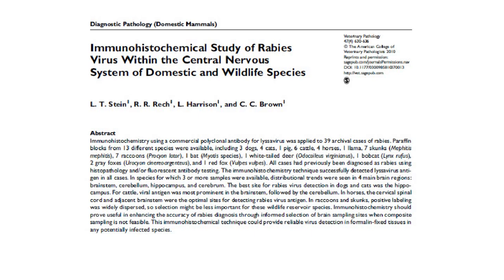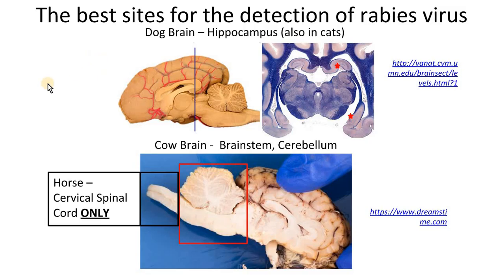This is a recent important paper describing the best location to detect nigri bodies for the diagnosis of rabies in different animal species. In dogs and cats, the best location is the hippocampus. In the cow, as we examined in our slide, the brain stem is the best location, and the cerebellum can work as well. In horses, the best location to detect nigri bodies is in the cervical spinal cord.